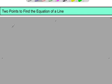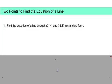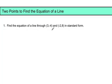We're going to look at finding the equation of lines when we're given just two points. Let's get an example here. Find the equation of the line through (3, -4) and (-2, 8) in standard form.